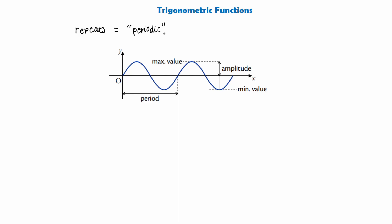We call one repetition of the graph one period, and it will keep repeating that period. This graph goes up, down and back up, and it will repeat that period — it will keep doing that. And I think you can already tell from this graph that it is the sine graph, so this graph in this case is y equals sine x.